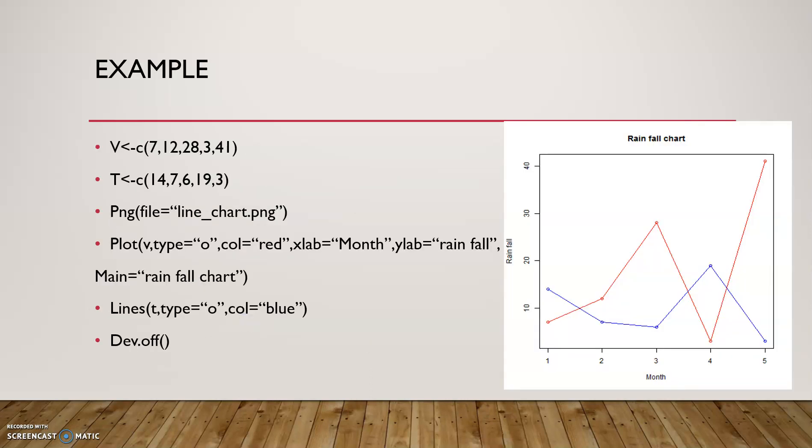This is the example of a line chart. Here you set up two lines v and t. Then linechart.png is the chart name. plot is v, type equal to o, col red, xlab equal to month, ylab equal to rainfall, main equal to rainfall chart. lines t, type equal to o, col equal to blue.